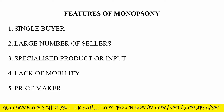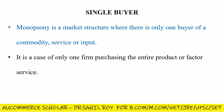Now let's talk about the features of monopsony. There are 5 features of monopsony. The first is single buyer, the second is large number of sellers, the third is specialized product or input, the fourth is lack of mobility, and the fifth is price maker. Let's understand each one of these.